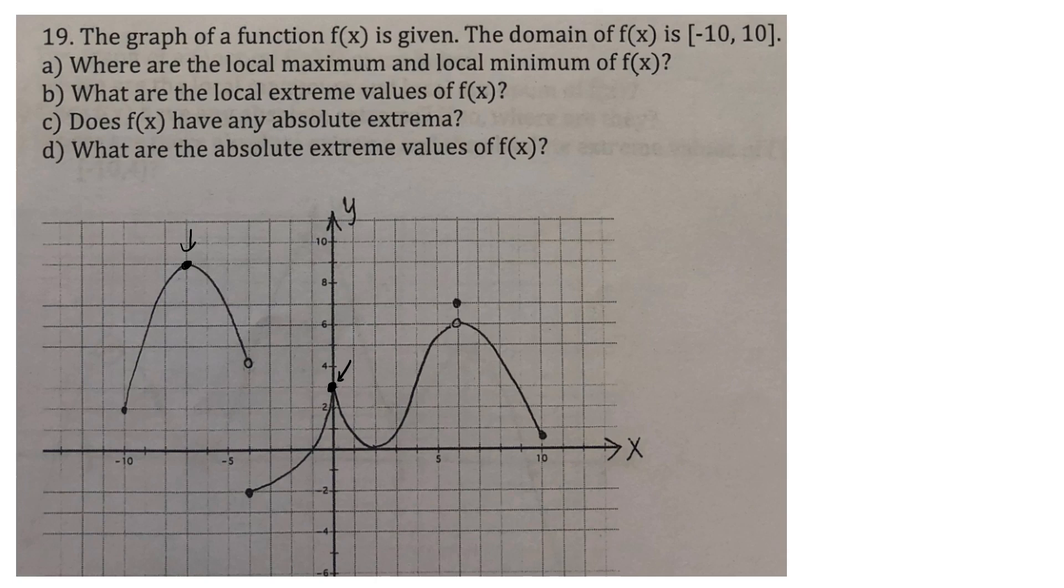And so local maximum will occur at what x value? It's unclear what they're looking for, but we're going to say they're looking for the x value. So this x value here is negative 5, negative 6, negative 7. I believe that's a negative 7. And then this x value here would be 0. So x equals negative 7, x equals 0.